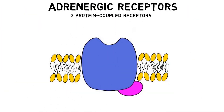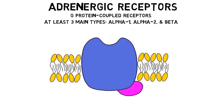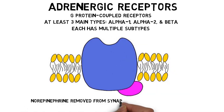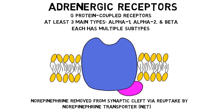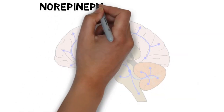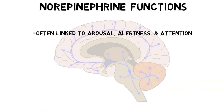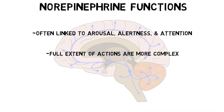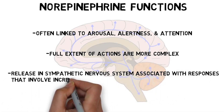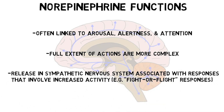Norepinephrine acts on G-protein-coupled receptors referred to as adrenergic receptors or adrenoceptors. There are thought to be at least three main types of adrenergic receptors — alpha-1, alpha-2, and beta-adrenergic receptors — each of which has multiple subtypes. Norepinephrine is removed from the synaptic cleft by a transport protein called the norepinephrine transporter. Although norepinephrine in the central nervous system is frequently associated with arousal, alertness, and attention, the full extent of its actions are more complex. Its release in the sympathetic nervous system is typically associated with responses linked to increased activity, like elevated heart rate and blood pressure.